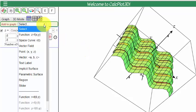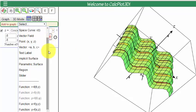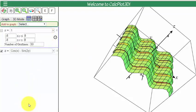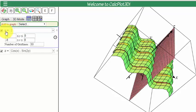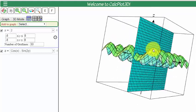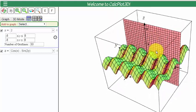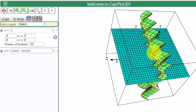So if I go to add to graph, select, and if I go to the bottom, I'll see function x equals f of y, z. Let's suppose I want to see what is the intersection of x equals 2 with this surface. I can click that little box, and now I can see how the plane x equals 2 intersects the surface.